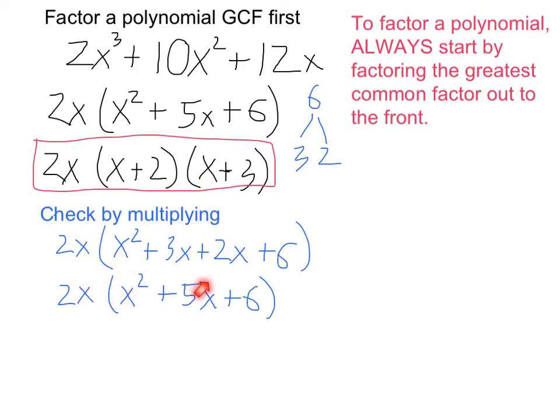And finally, if I distribute, we'll see we get back to the original, like this. So, basically, the trick is always, no matter what, look for the greatest common factor between all the terms, and then apply some other techniques of factoring to factor whatever is left. Thank you.